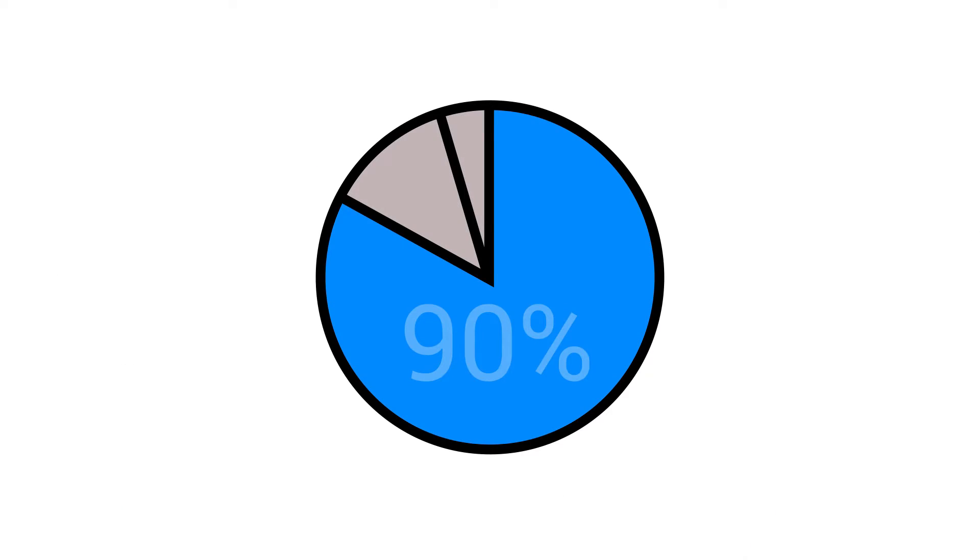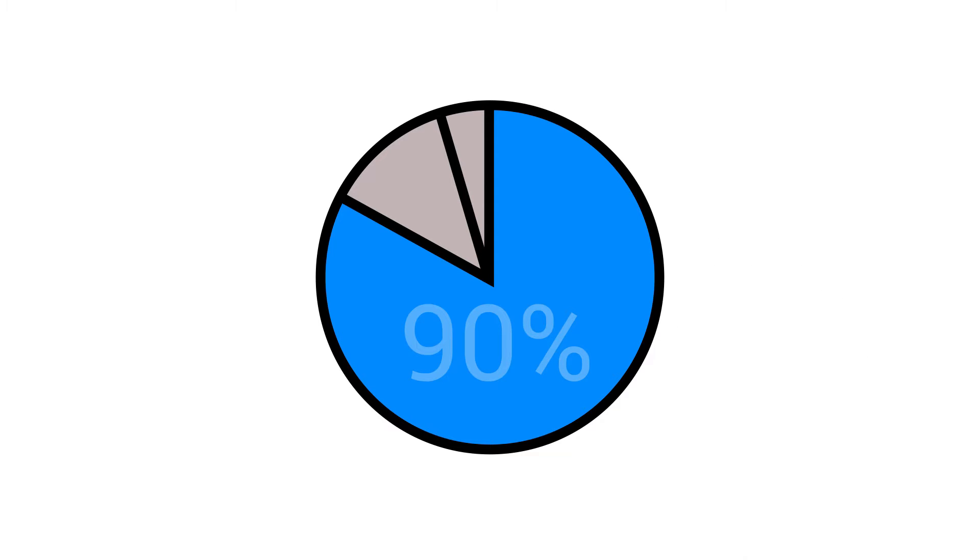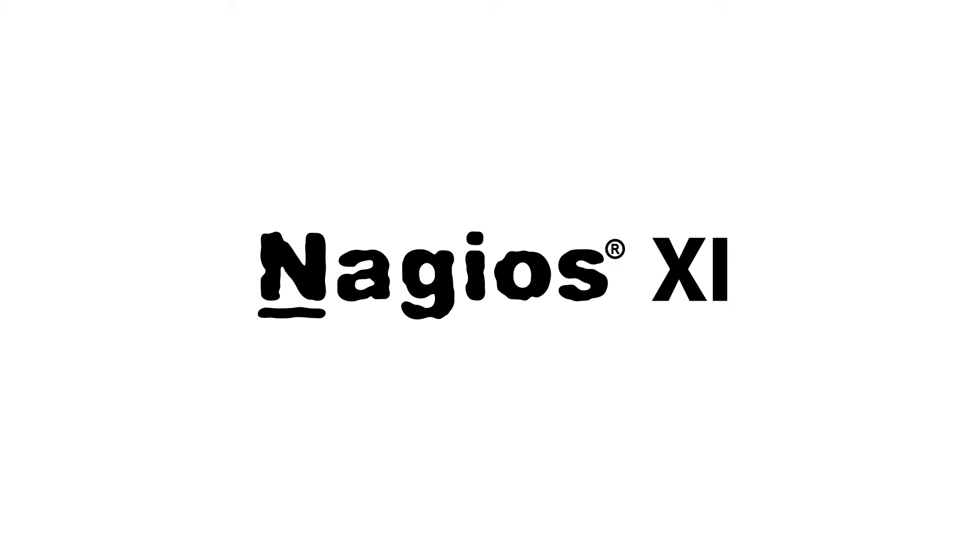The breakdown is kind of like this. For about 90% of things that people want to monitor—websites, CPU load, memory, disk usage, things like that—90% or so, Nagios XI has a wizard built in by default. You can run it, you can start monitoring right away.